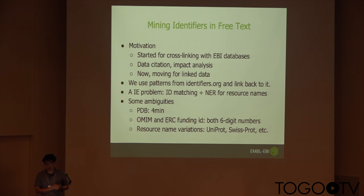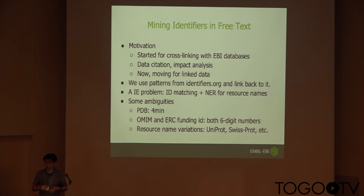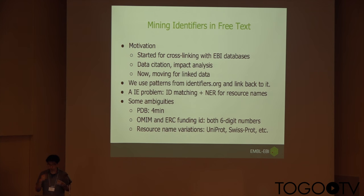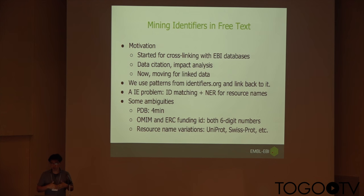Why? We started mining identifiers for cross-linking with EBI databases, then we realized data citation is getting more important, and mentioning of those accession numbers per database is one metric to measure their impact. After that we also found that accession numbers are very often used as part of a URI, which makes this a really good resource for linked data. So now we are more focusing on linked data. We use ID patterns from identifiers.org, and once we apply those patterns and find those mentions in articles, we produce a URI based on the identifiers.org URI scheme.